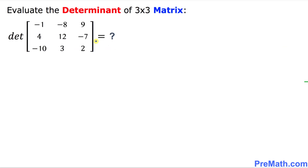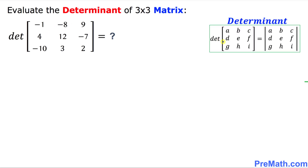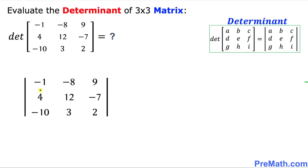Here is our next example and we are going to evaluate the determinant of this 3x3 matrix. The determinant of a 3x3 matrix can also be written with vertical straight lines as I showed you. I have written down this determinant and the very first thing we are going to do is draw a horizontal line right up here.